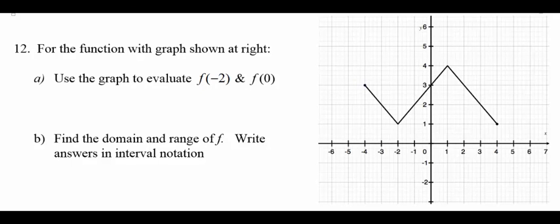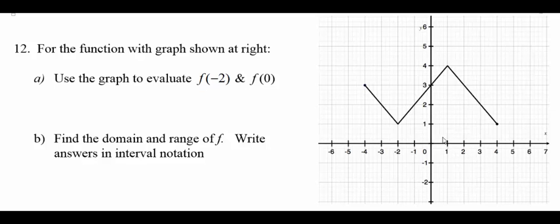For the function shown on the graph, evaluate f(-2) and f(0). When x = -2, y = 1, so f(-2) = 1. When y = 0, x = 3, so f(0) = 3. The domain spans from -4 to +4, inclusive: [-4, 4]. The range spans from positive 1 to positive 4, inclusive: [1, 4].